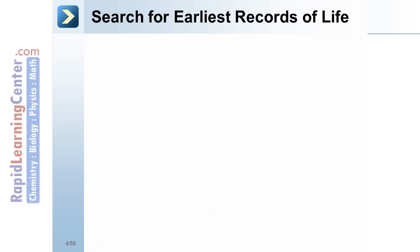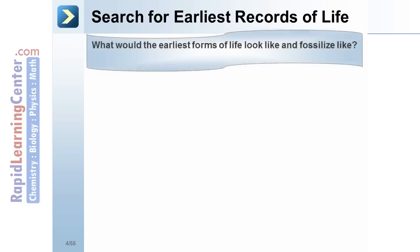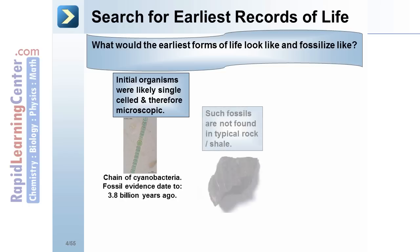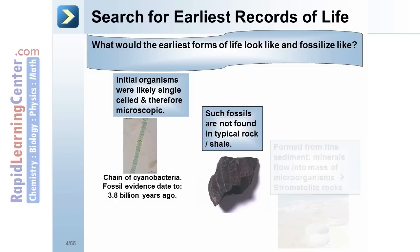Search for earliest records of life: what would the earliest forms of life look like, or fossilize like? Initial organisms were likely single-celled and therefore microscopic. Cyanobacteria fossil evidence goes back to 3.8 billion years ago. Such fossils would not typically be found in rock or shale.